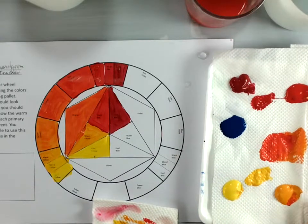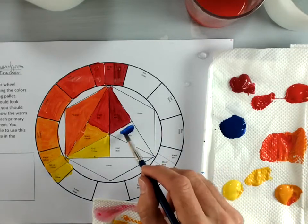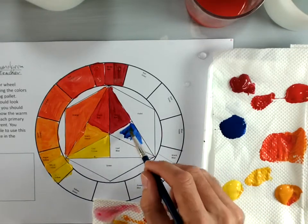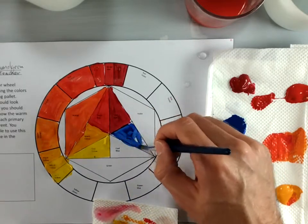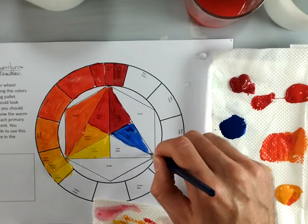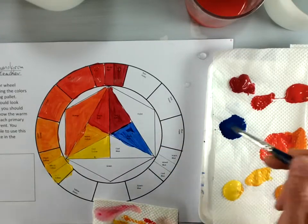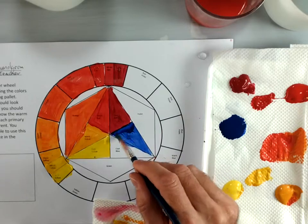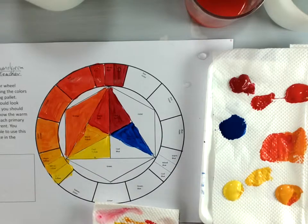First of all, I'm going to take some of this warm blue and paint it right in my warm blue part of my primary triangle here. Now, a lot of kids say to me, Mr. George, I have a really hard time seeing the difference between the warm blue and the cool blue.